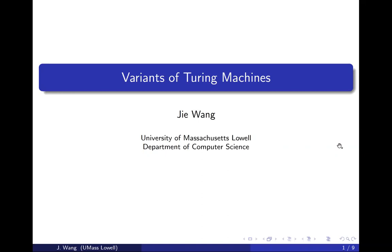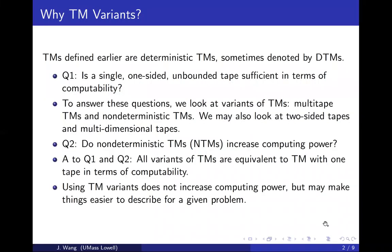In this video we are going to look at variants of Turing machines. In the last video we defined a Turing machine as a finite control plus a one-sided unbounded tape memory. Today we're going to look at different kinds of Turing machines with various types of tapes as memories, and also non-deterministic Turing machines in addition to deterministic ones.